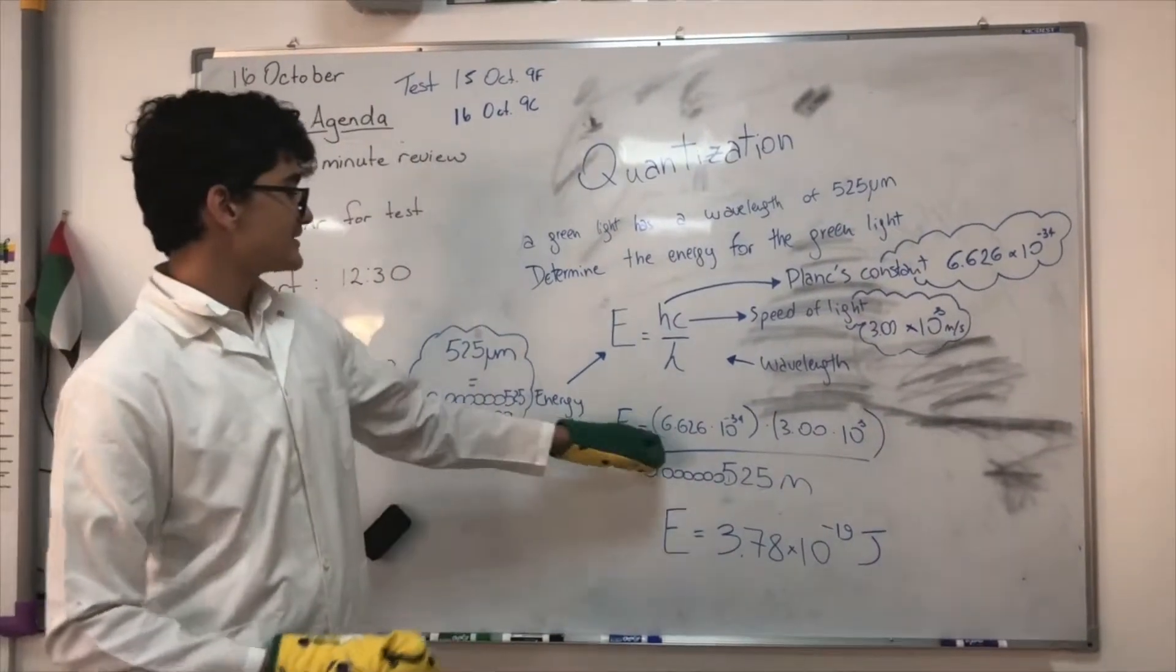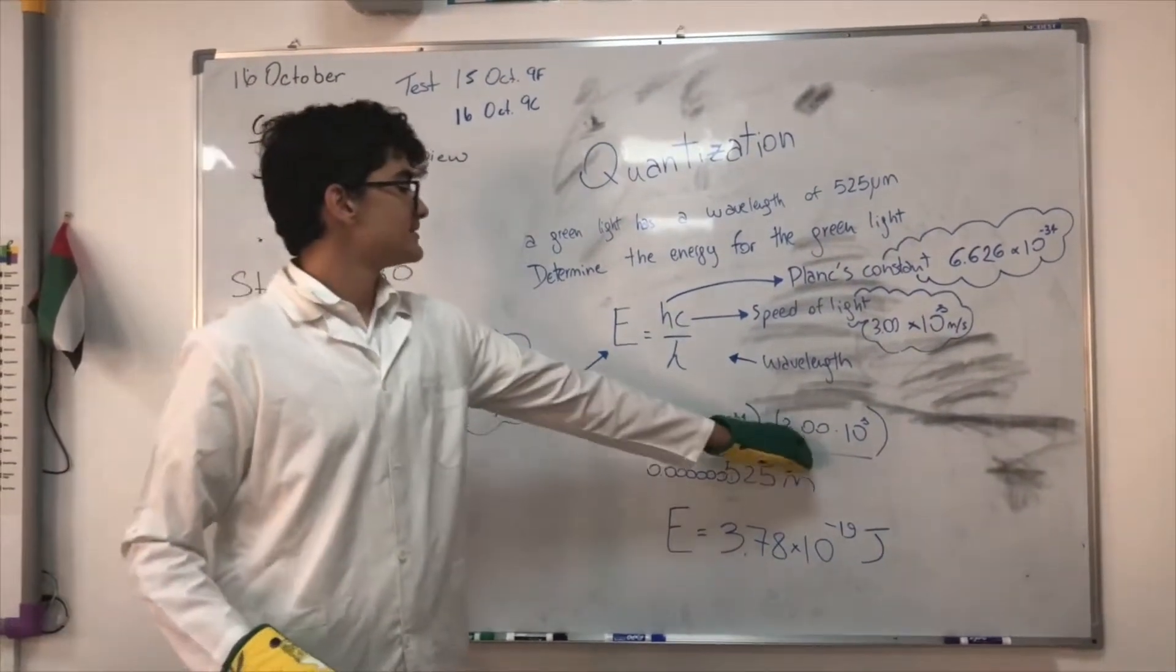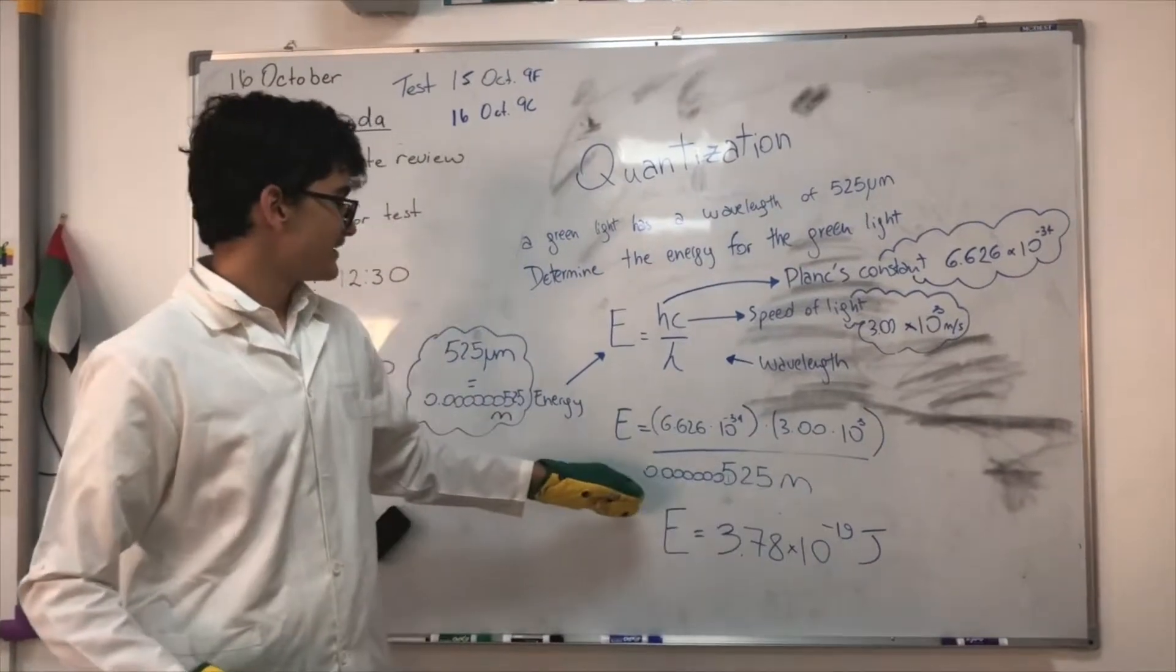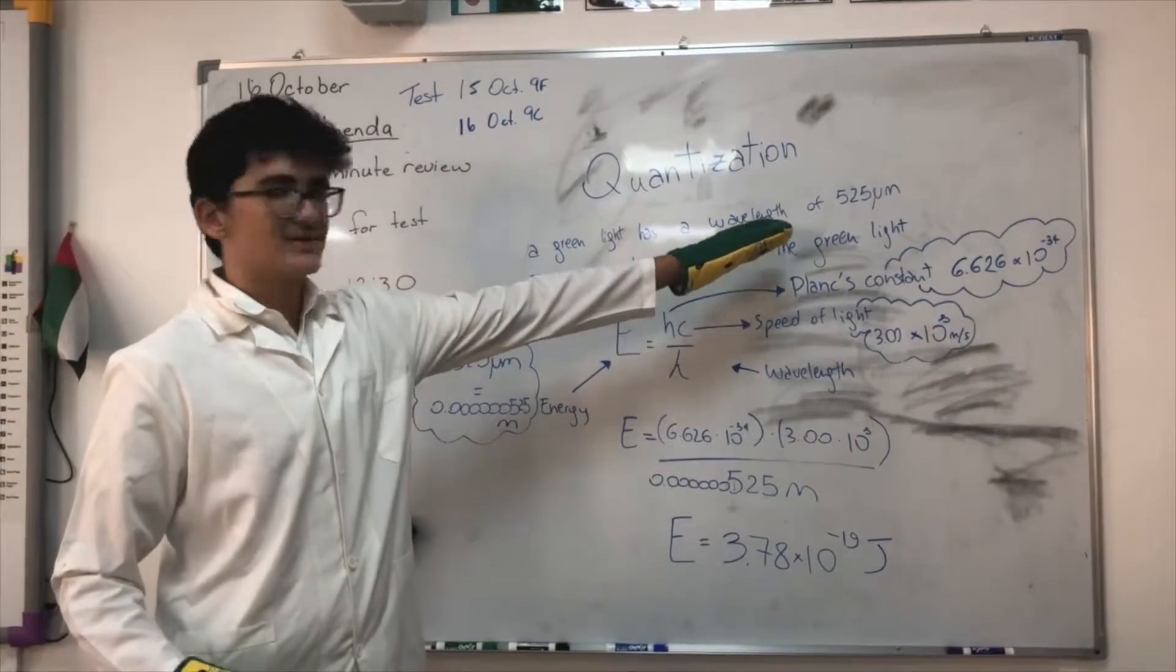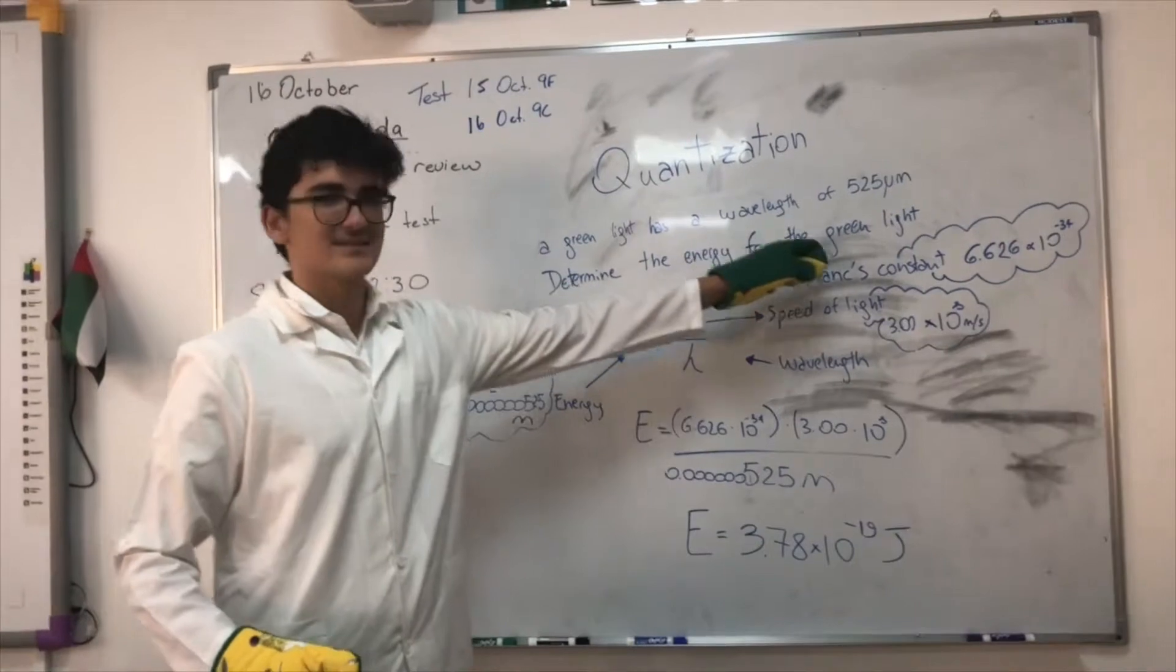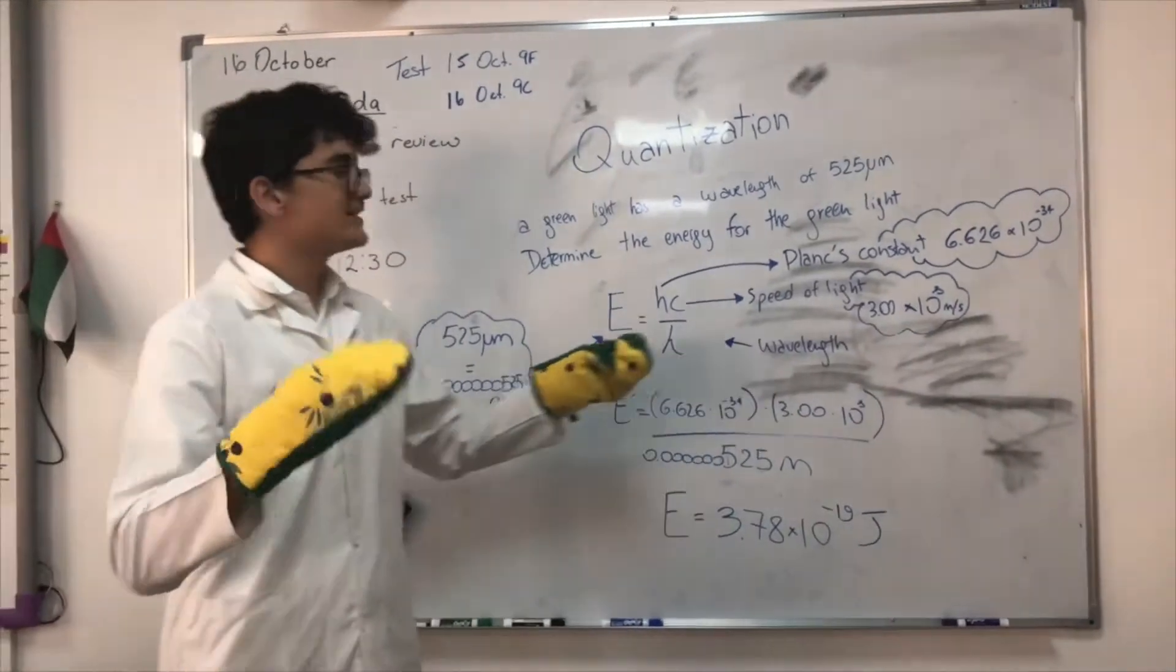You have Planck's constant right here, times speed of light, divided by the nanometers that they gave you. The wavelength, basically. And then, you have to convert. We have to convert.